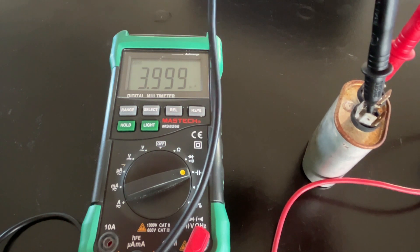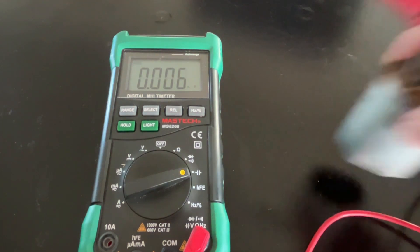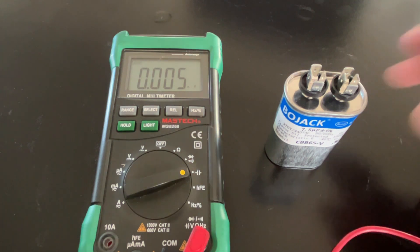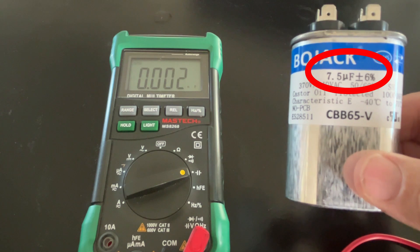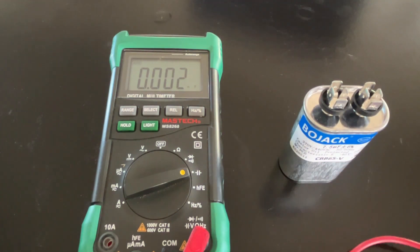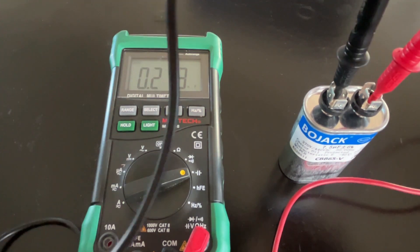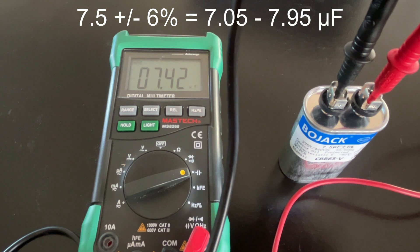All right, let's try this new one. This is a seven and a half plus or minus six percent. And we get 7.42—that's within six percent of seven and a half, so this one is good.